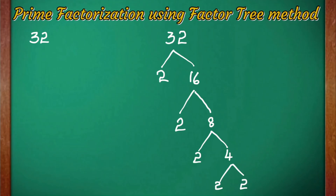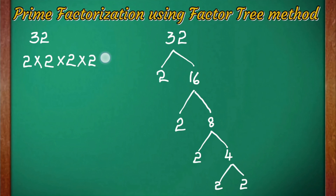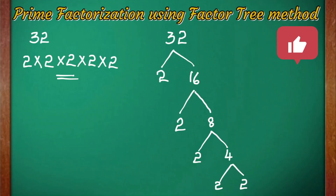Now all the numbers left at the end are prime numbers, so here we stop. The prime factors of 32 are 2 × 2 × 2 × 2 × 2 — totally five 2's. So these are the prime factors of 32.